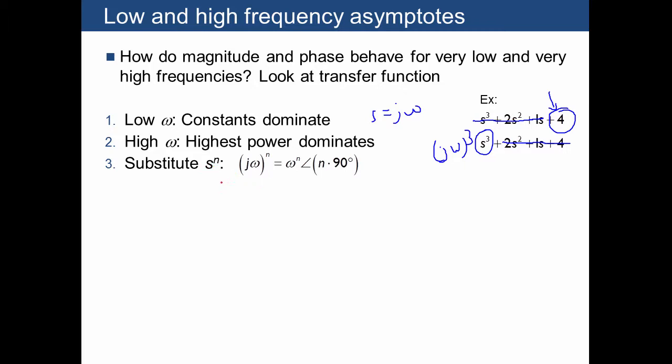We'll also add another piece of information, which is that when we plug in S equals J omega, and you have J omega raised to the nth power, this is the same thing as omega to the nth power as a magnitude with an angle of n times 90 degrees. The reason for this is because this term is just J to the n times omega to the n, and J to the n is the same thing as one angle 90 degrees, that's what J is, raised to the nth power, which is one angle n times 90 degrees.